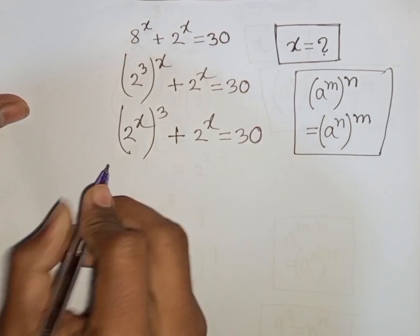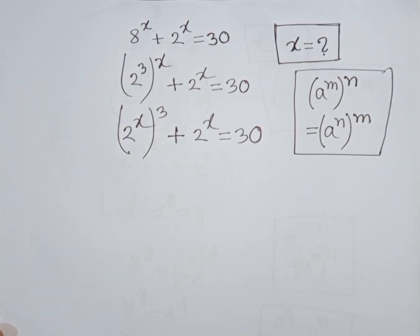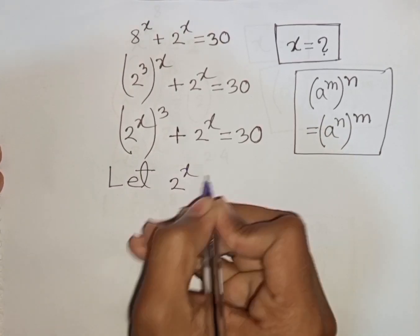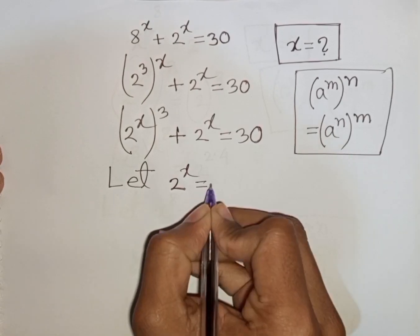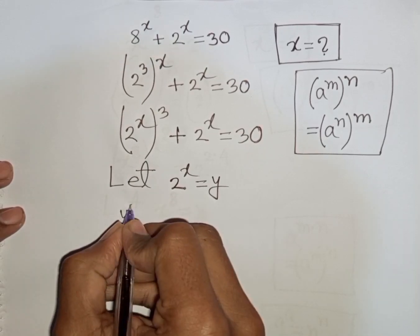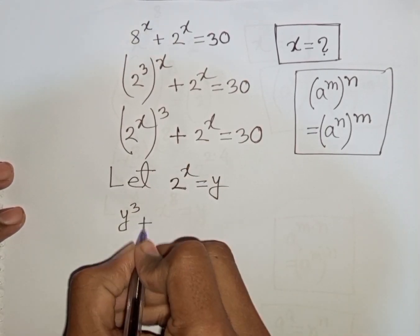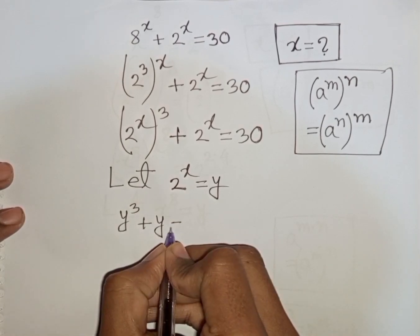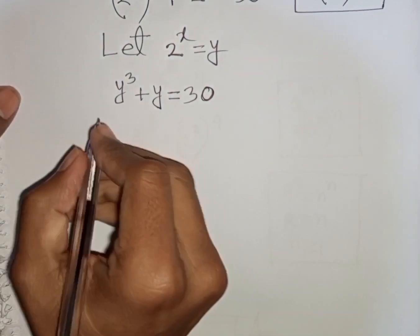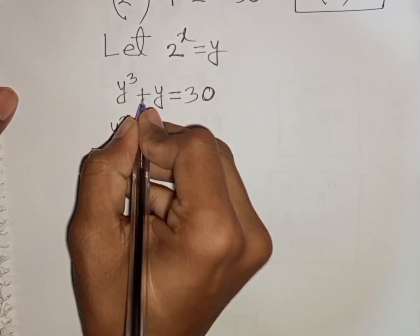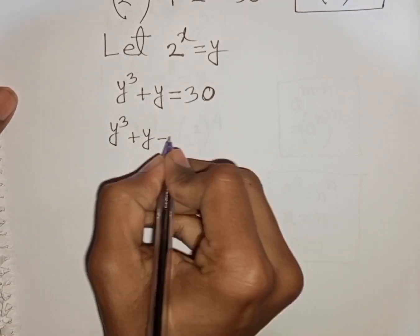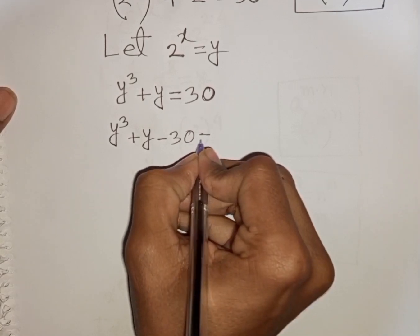We see 2^x appears in both terms, so let 2^x be substituted by y. Our equation becomes y³ plus y equals 30. We can rewrite this as y³ plus y minus 30 equals 0.